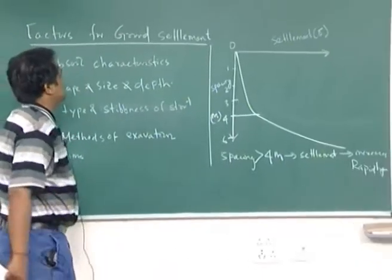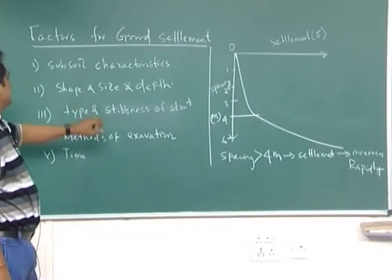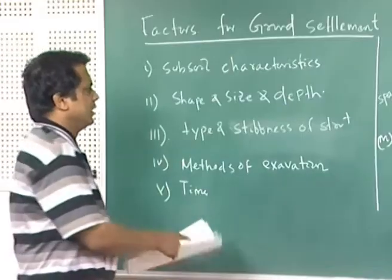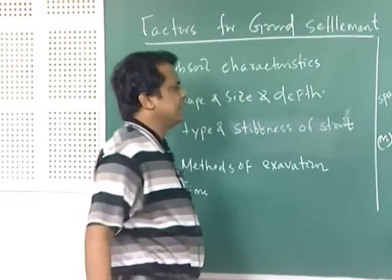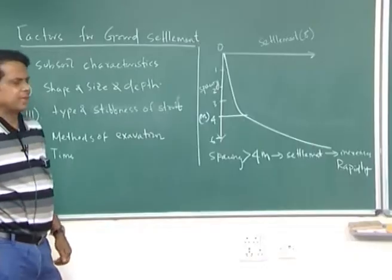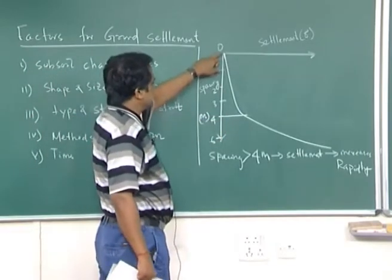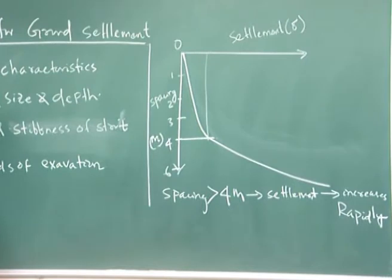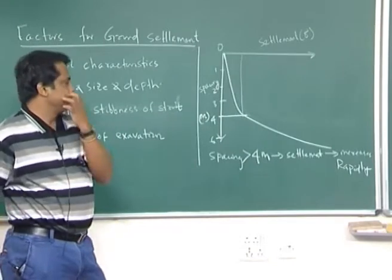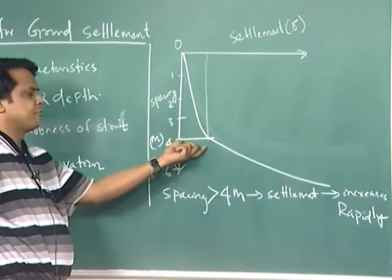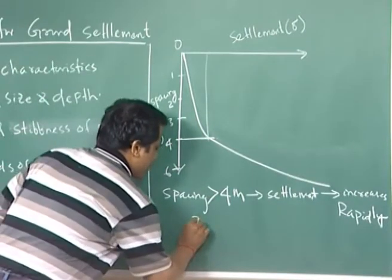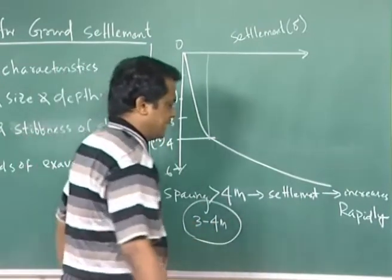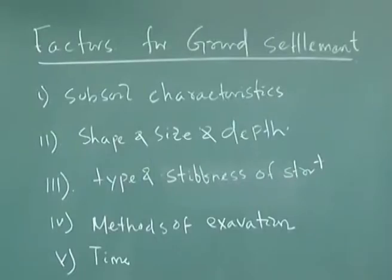There is no fixed criteria for ground settlement. As mentioned, shape, size and depth, type and stiffness of strut — if you look at here, the spacing of the strut for Calcutta metro soil, if it is increased to more than 4 meters, initially the settlement up to 4 meter spacing will be negligible. Beyond 4 meters of strut spacing, the settlement increases very rapidly. This is an experimental investigation particularly for Calcutta metro rail. The spacing between 3 to 4 meters has been recommended as an optimum spacing.